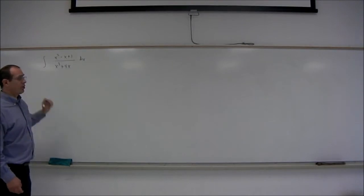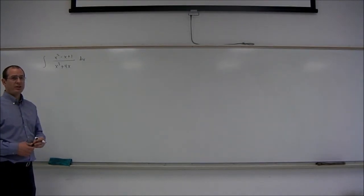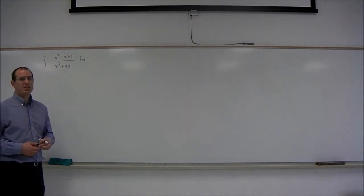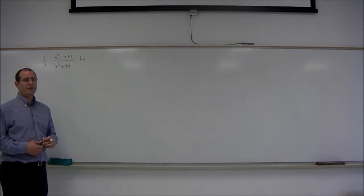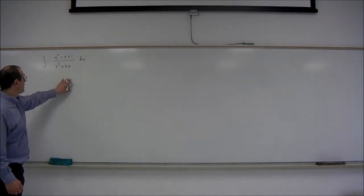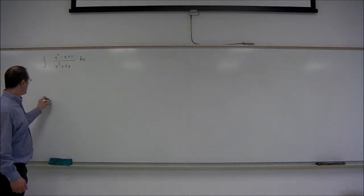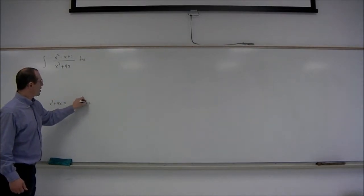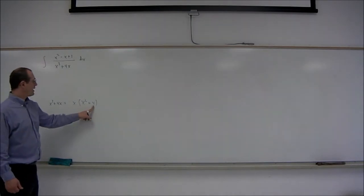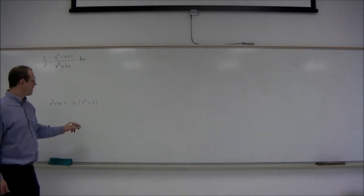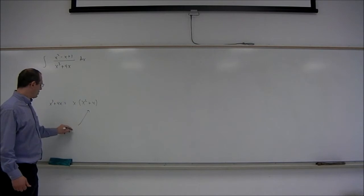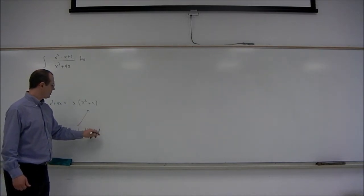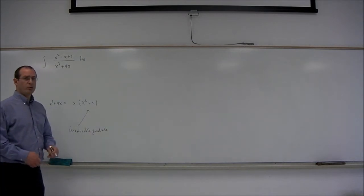This is an example of what's called a rational function — a ratio of polynomials. When we want to make a partial fraction decomposition for such a function, the first thing we do is completely factor the denominator. So x cubed plus 4x factors into x times x squared plus 4. Now x squared plus 4 does not factor, so this is what's called an irreducible quadratic factor.